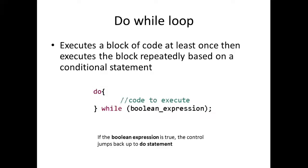Alright, so now let's talk about the do-while loop. The do-while loop is a loop that executes a block of code at least once, and then executes the block repeatedly based on the conditional statement. The do-while loop is pretty similar to the while loop, but what happens is that the block of code is going to be executed at least once whether or not the condition is met. Basically, the general flow of the program would first go into the do statement, where the code is automatically executed, and then after that this while conditional statement is going to be checked, and if this boolean expression is true, it's going to make its way back up to this code.